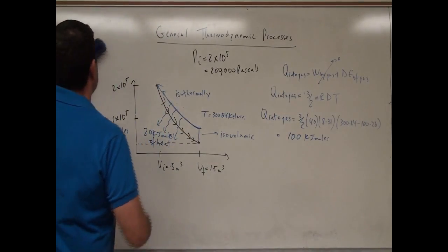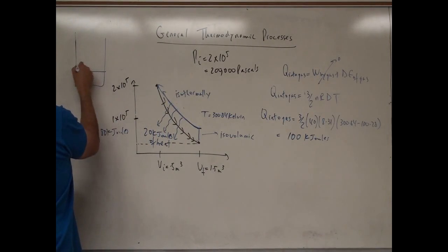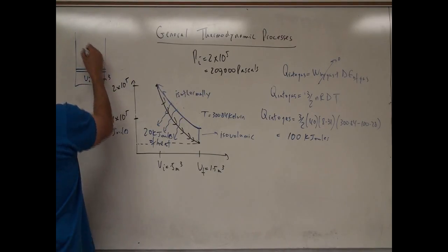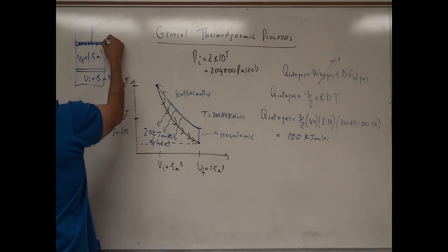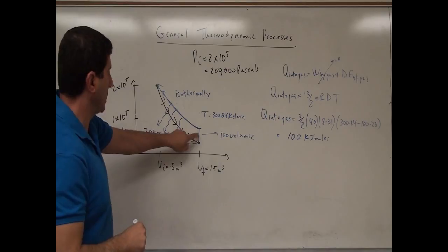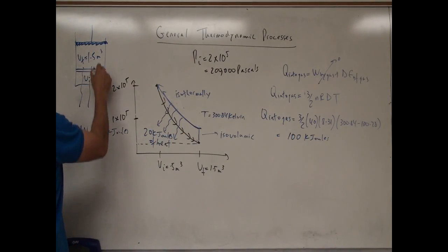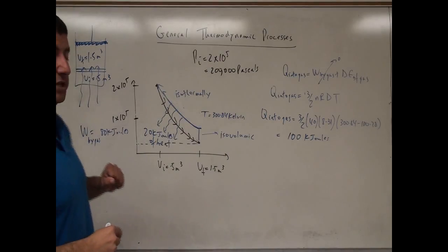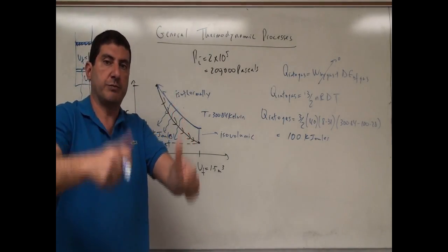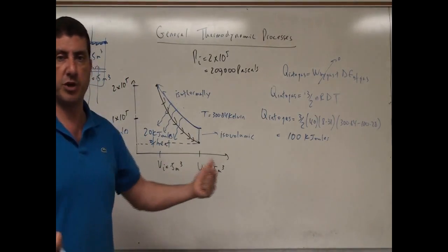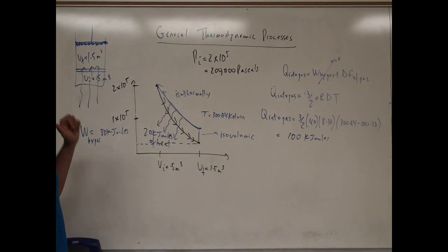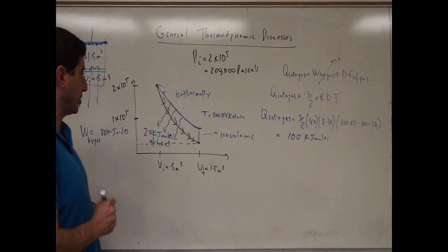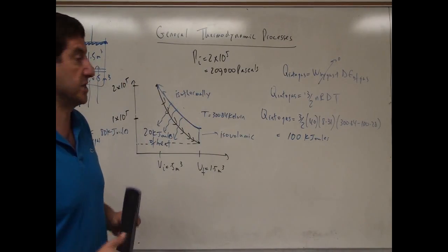So the gas expanded from 0.5 to 1.5 cubic meters; then the piston was bolted, keeping the volume fixed. Heat is added, raising the temperature from about 100 K to 300.84 K and the pressure from 22,000 up to 66,000 Pa. From there we perform the isothermal compression. In that isothermal process, the work done by gas = nRT × ln(V_final / V_initial).